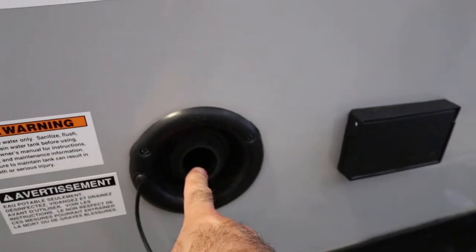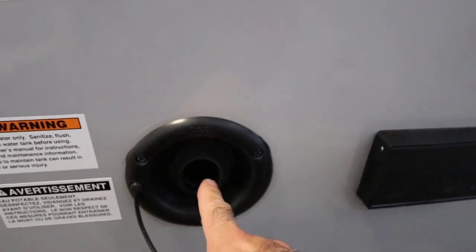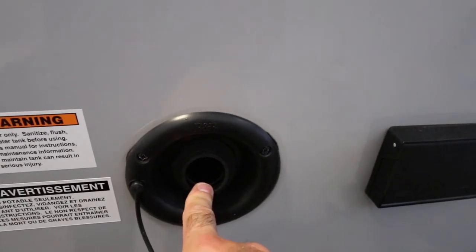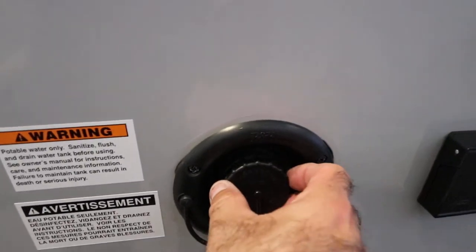You simply turn this cap, remove it. You can place a hose here, you can also empty jugs of water into it if you're traveling on the road. So when you're done,